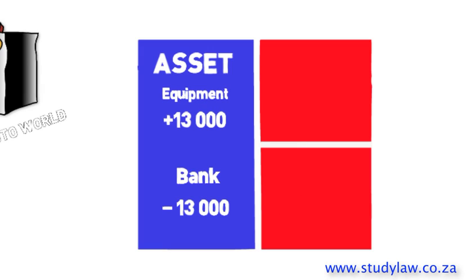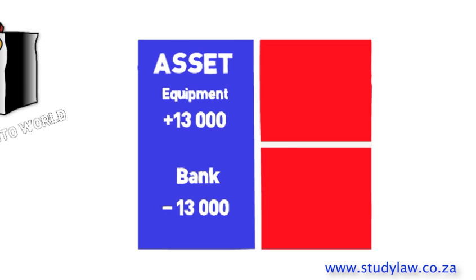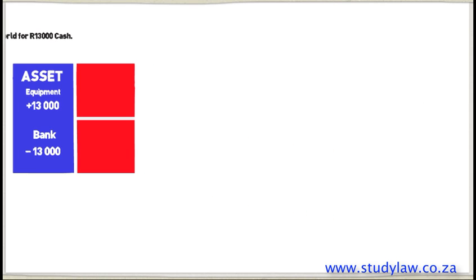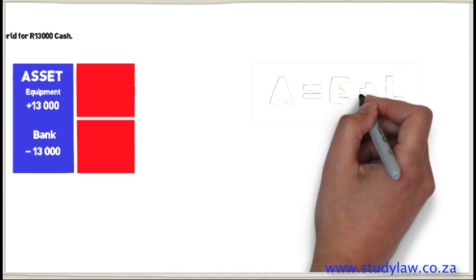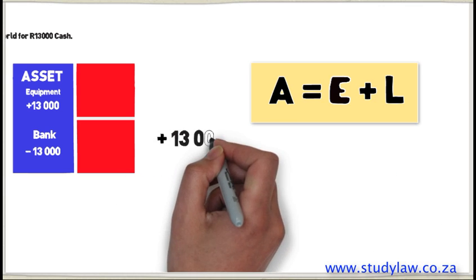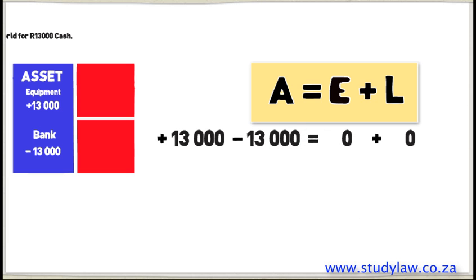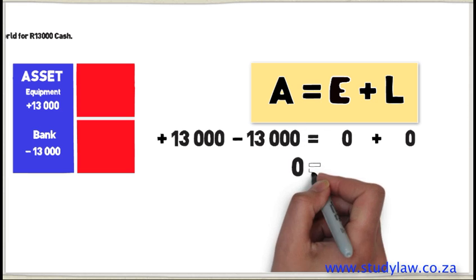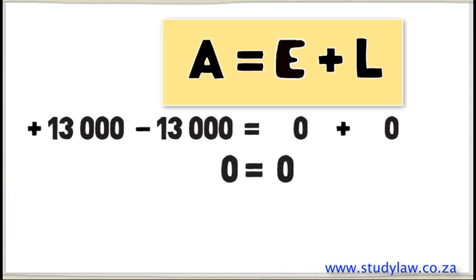In this transaction, we have only dealt with the blue side of the box — in other words, only assets. We can see that both sides of the box are still equal, because R13,000 minus R13,000 equals zero. Using the accounting equation: Assets equals Equity plus Liabilities — positive R13,000 minus R13,000 equals zero plus zero. Therefore, our equation balances.